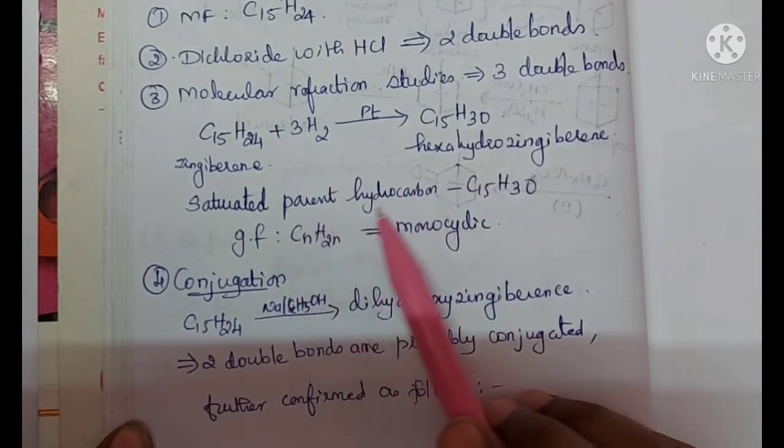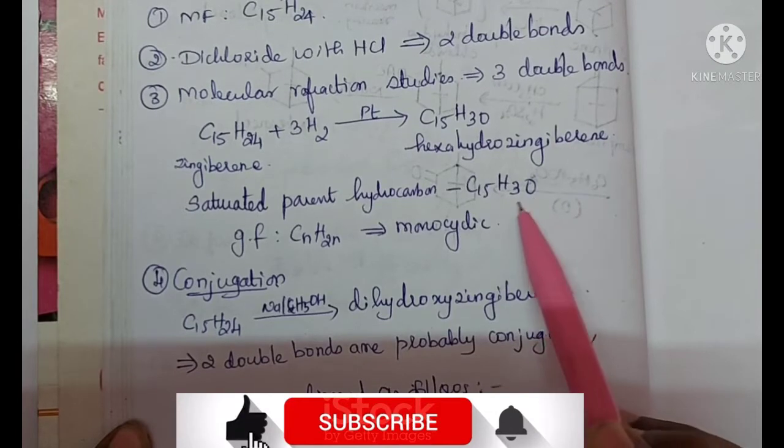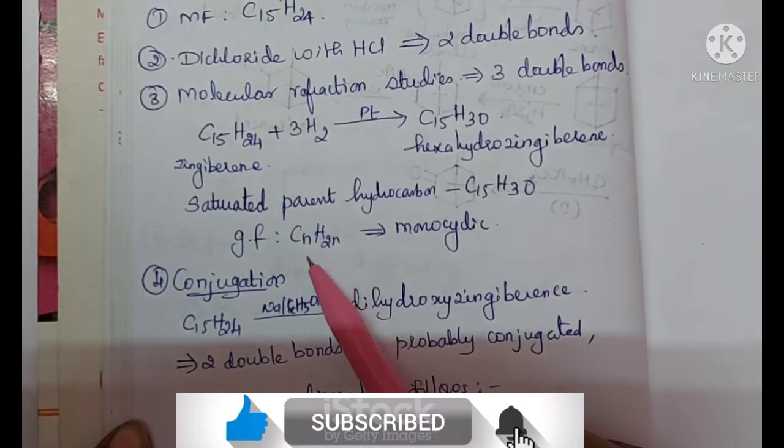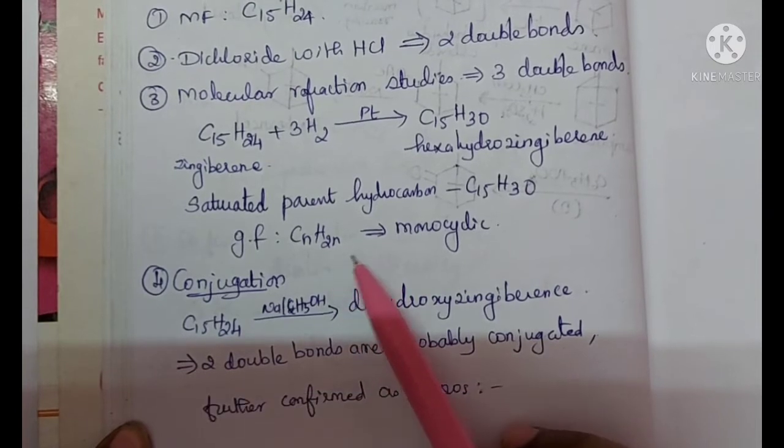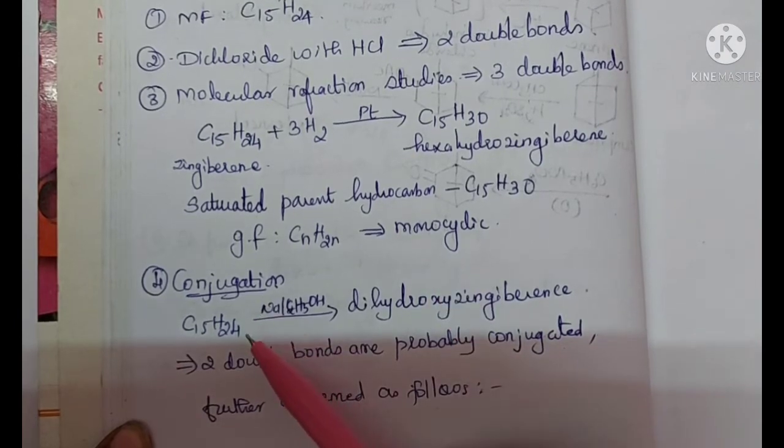We get the saturated parent hydrocarbon with the molecular formula C15H30, which corresponds to the general formula CnH2n. This general formula corresponds to the monocyclic compounds, so Zingiberine is a monocyclic terpenoid. Next we are going to check whether it has conjugation.